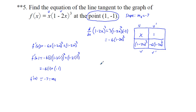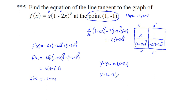Using point-slope form, y − y₁ = m(x − x₁), we have y − (−1) = −7(x − 1), or y + 1 = −7(x − 1). That is the equation of the tangent line for problem 5.